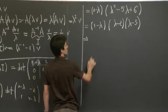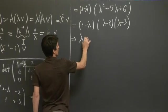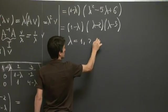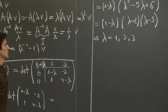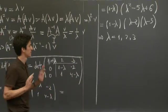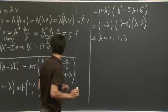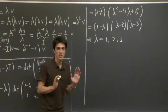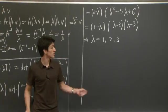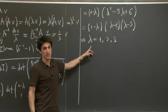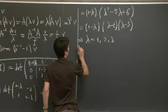So the three eigenvalues of A are 1, 2, and 3. So first half of our problem is done. Now, we just need to find what the eigenvectors associated with each of these eigenvalues are. How do we do that?